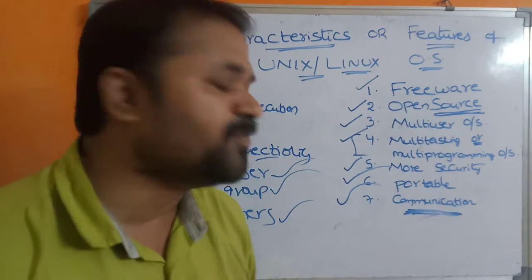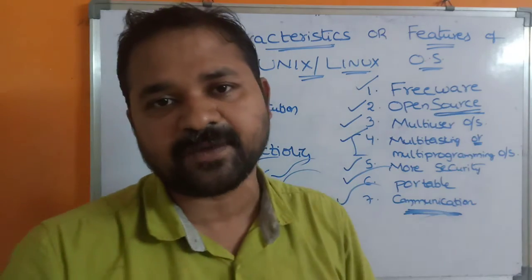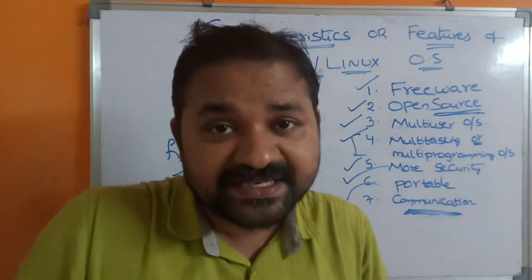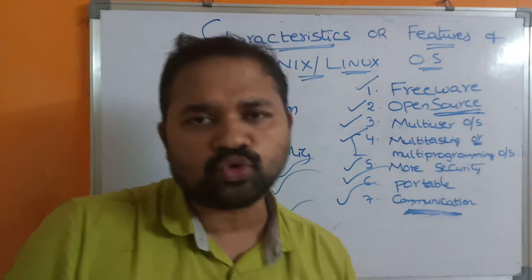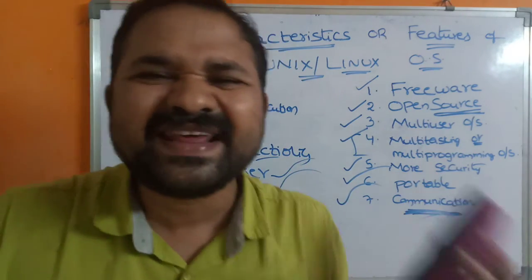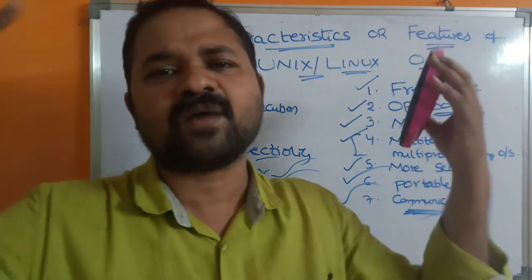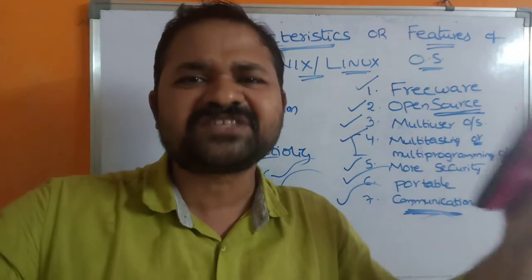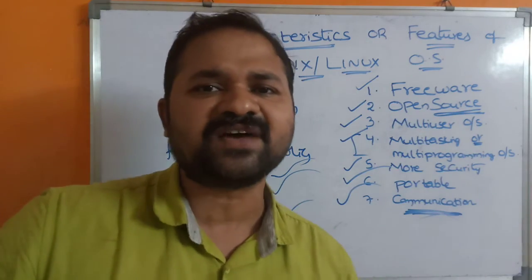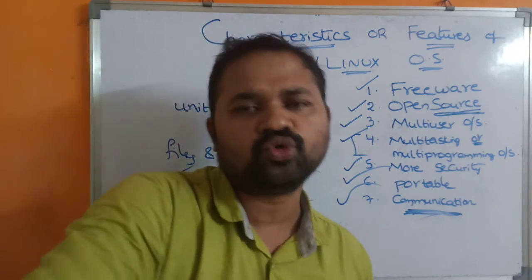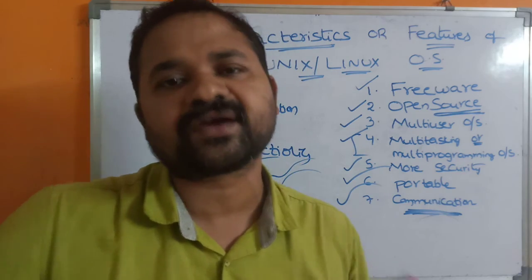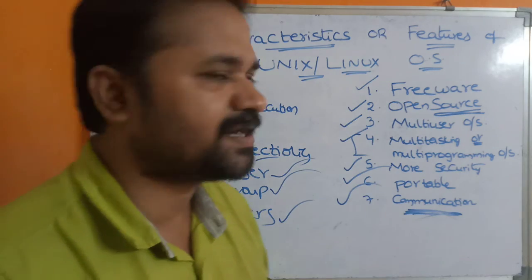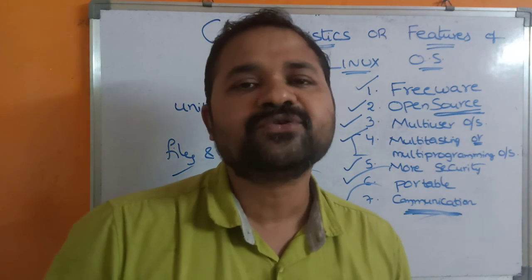The last feature is communication. We can implement communication very easily in Unix. We can transfer files from one user account to another user account very easily. Unix provides several commands such as copy, move, and remove to exchange files between accounts. These are the various features or characteristics of Unix operating system.